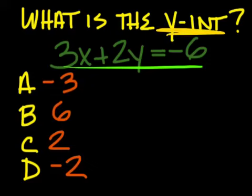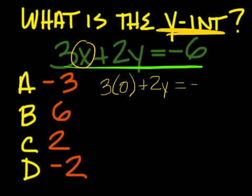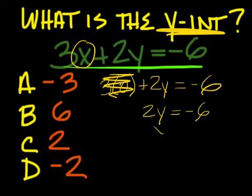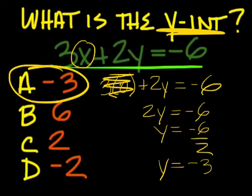If you're going to find the y-intercept, then put a zero in where x is at. So 3 times 0 plus 2y equals negative 6. When you put a zero in to that x term, it just cancels it out. You're left with 2y equals negative 6. Divide negative 6 by 2 and you'll get negative 3, which is a.